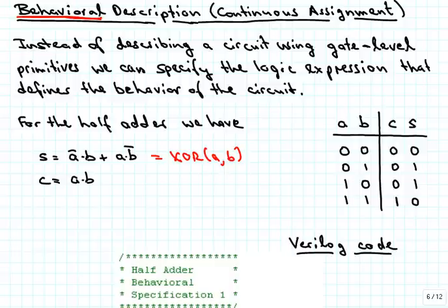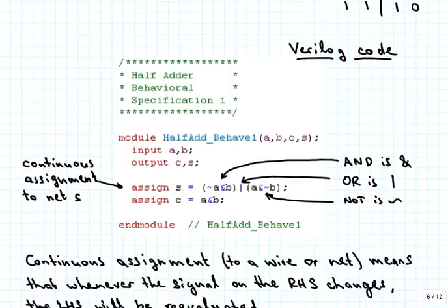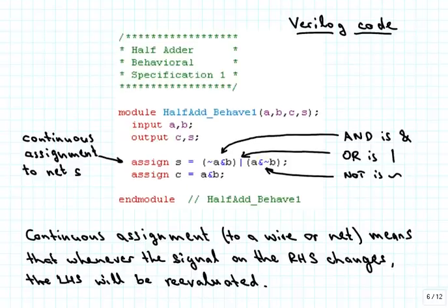Now in the Verilog code, here is what this is going to look like. First of all, the header is now half adder behavioral specification 1 because there will be some others later, as opposed to structural specification. The header of the module, the beginning of the module is exactly the same as we had before except that I added the keyword behave to it just so that we can distinguish it from the structural description. The port descriptions, that looks the same as we had before. We need to declare which ones are inputs and which ones are outputs. That is no different than before. But now we use the assign statement. That's a continuous assignment to a net or to a wire S.